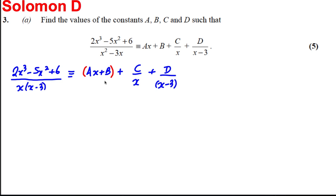Now let's multiply everything together. So the right hand side has denominator X(X - 3). Then our next line will be 2X³ - 5X² + 6 is the same thing as (AX + B). Well that needs to be multiplied by X and X - 3.